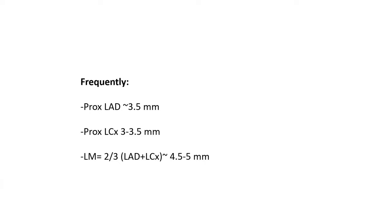A general sizing idea aside from IVUS: the proximal LAD is about 3.5 mm, the proximal left circumflex about 3 to 3.5 mm, and the left main — based on the fractal law, which is two-thirds of the summation of LAD plus left circumflex — is usually around 4.5 to 5 mm.